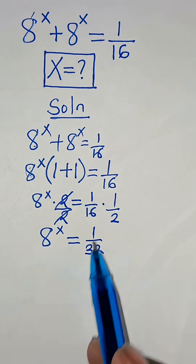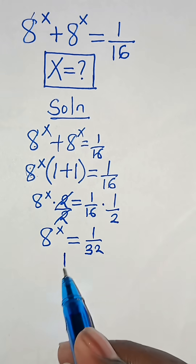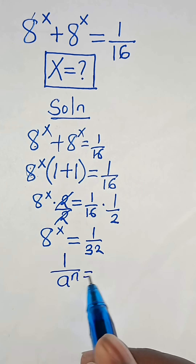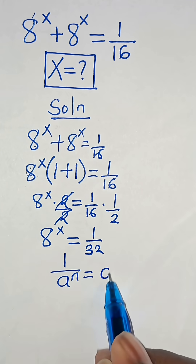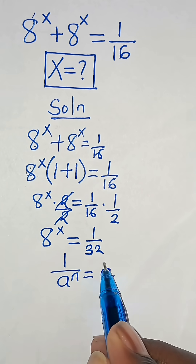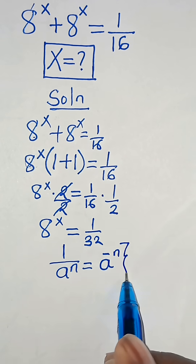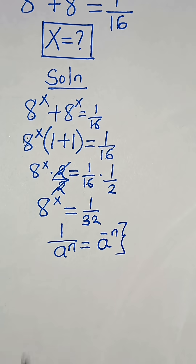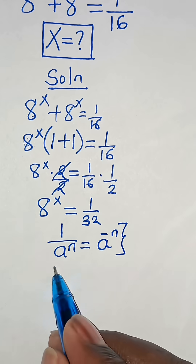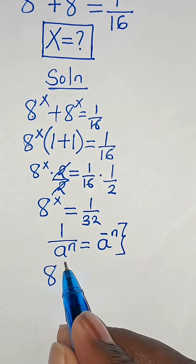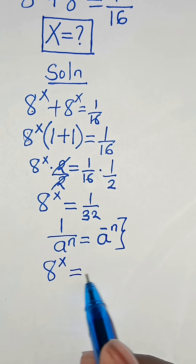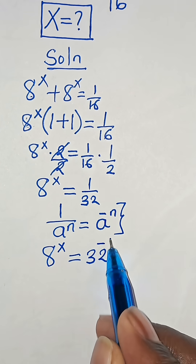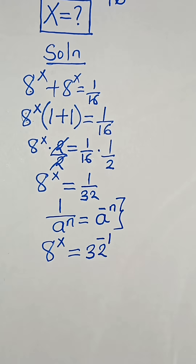Now, 1 over 32 is in the form of 1 over 8 to the power of n, which can be expressed as 8 to the power of minus n. Applying this property, we have 8 to the power of x equal to 2 to the power of minus 5.